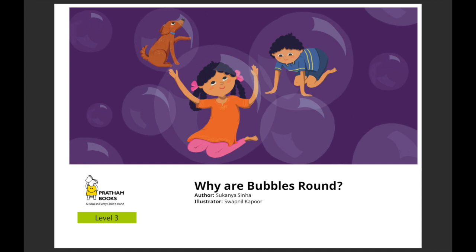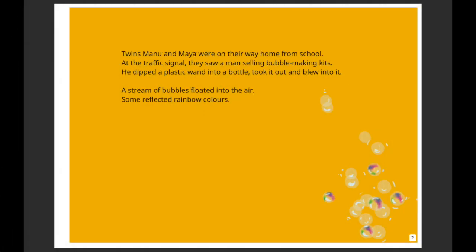The author of this story is Sukanya Sinha and the illustrations are done by Swabnil Kapoor. Have you ever blown soap bubbles and wondered why they are always round and not any other shape? Come, let's find it out with Manu and Maya, who try to make different shape bubbles. But the bubbles still turned out round — so let's figure out why!